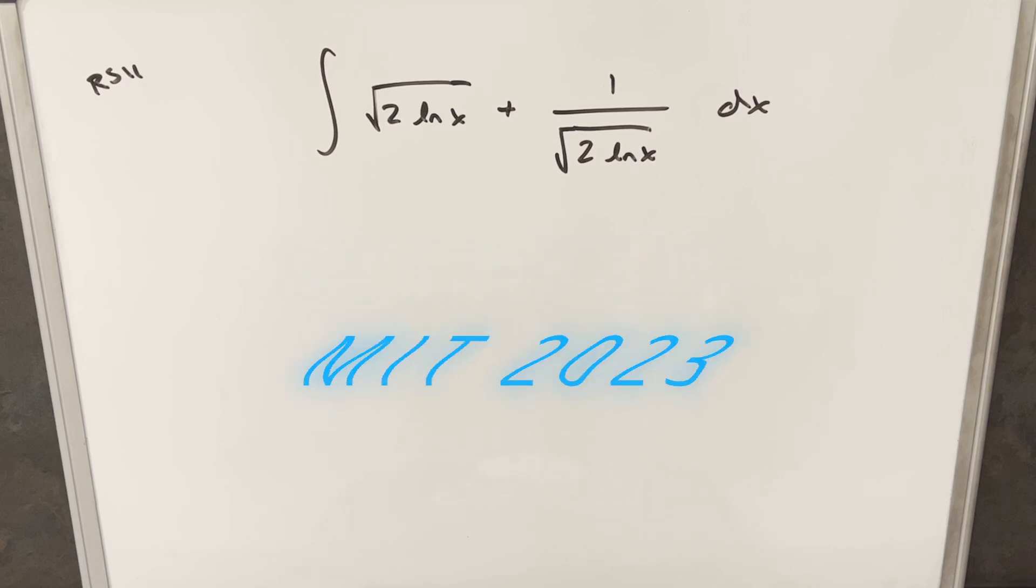We have the integral of square root of 2 ln x plus 1 over square root of 2 ln x dx.